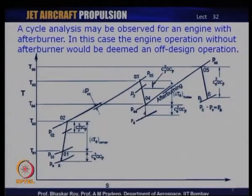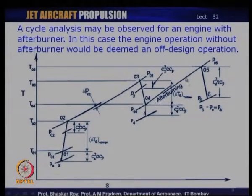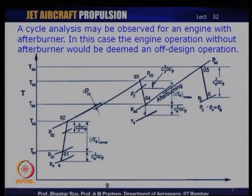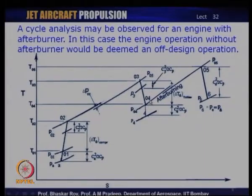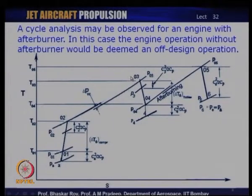If we take a different kind of engine, say an afterburner engine designed for afterburner operation, not only are all the nodal points 01, 02, 03, 04, 05, and 06 different, but it is entirely possible that in many afterburning engines you may not have the afterburner engaged at all. A non-afterburning operating point is essentially an off-design operating point, and the engine needs to be reasonably efficient during this off-design non-afterburning operating point.